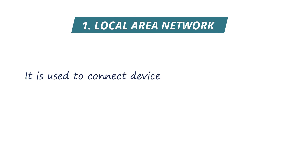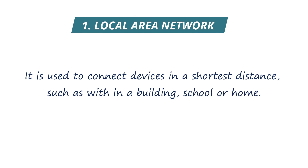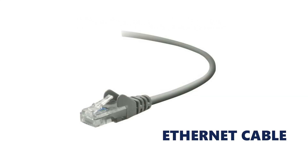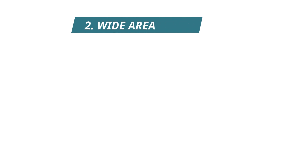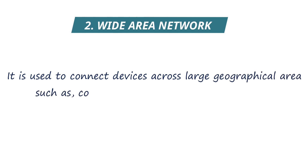Types of networks: the first one is Local Area Network, simply called LAN. It is used to connect devices over a short distance, such as within a building, school, or home. LAN is mostly connected through Ethernet cables, and it is the most commonly used network type.